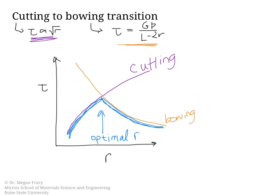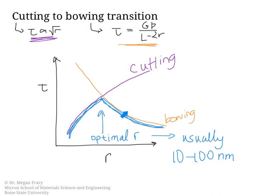In many cases, this optimal radius is usually on the order of 10 to 100 nanometers. If you are operating below the optimum radius, you could increase the strength by continuing an aging process. If you have passed this maximum and are now moving down, the material is said to be overaged. This is the second mechanism by which dislocations can interact with particles in order to strengthen the material.